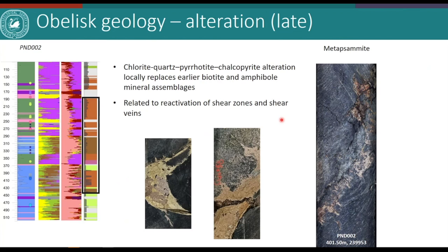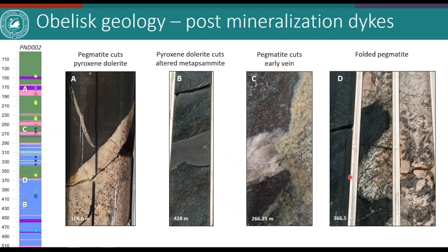A second generation of alteration overprints the earlier higher-temperature one, and is defined by chlorite and sulfides. These are semi-massive sulfides shown in the photographs, with piercement textures cutting the wallrock, and where they interact with the earlier quartz veins they cause local replacement or granulation of those veins. The timing of the dikes is also shown. The granitic pegmatite clearly post-dates the darker pyroxene dolerite. The pyroxene dolerite is post-mineralisation because it cuts mineralised and altered metasandstone and metagabbro wallrocks, and the pegmatites are clearly post-mineralisation as a quartz-rich vein is cut by the pegmatite.